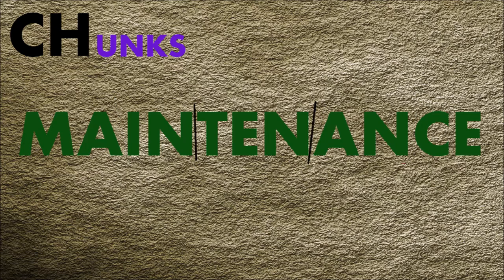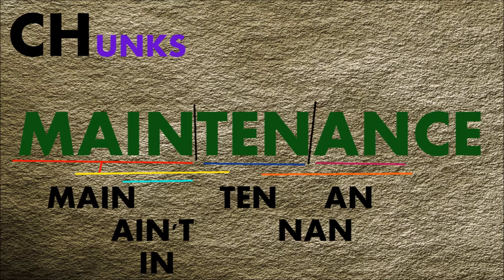Or we can split it into chunks in syllables: main-ten-ants. It really doesn't matter so long as it makes sense to you. Next, find other smaller words hiding in the big word. You can underline these, circle them, or even use different colors — whatever makes best sense to you. Use your imagination as much as you can. You can also write the smaller words underneath; you can do either one or both, whichever works best for you.